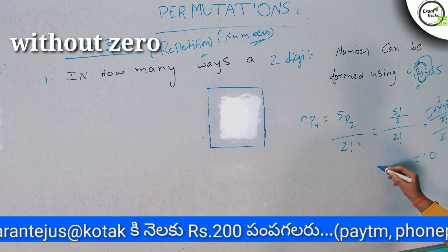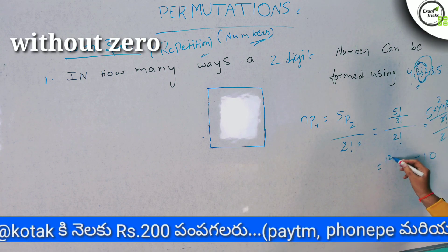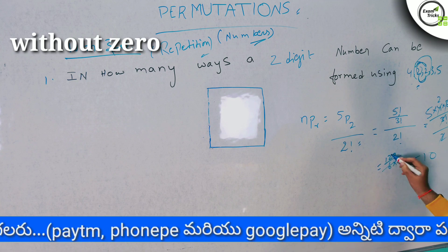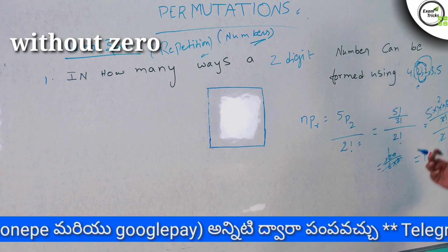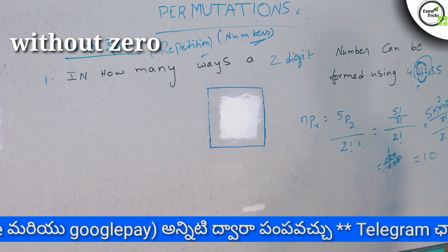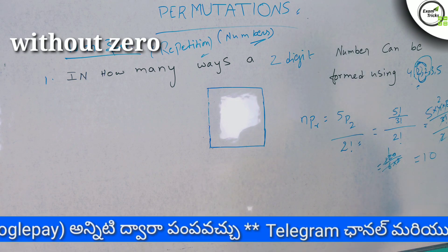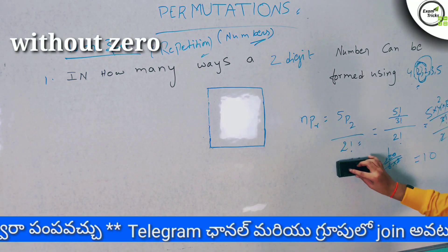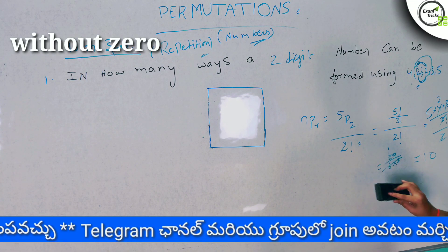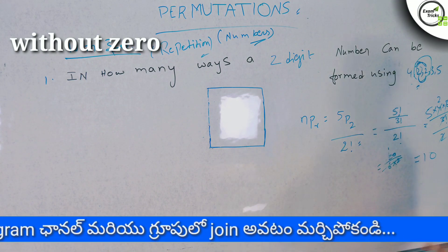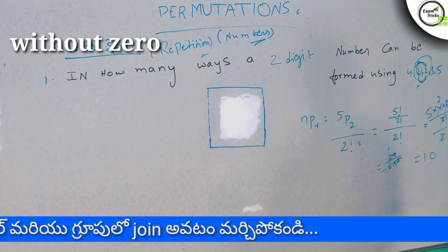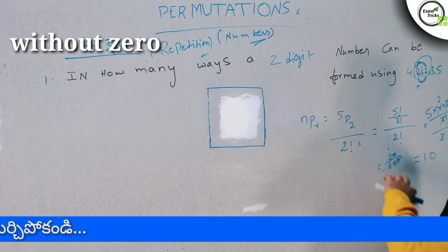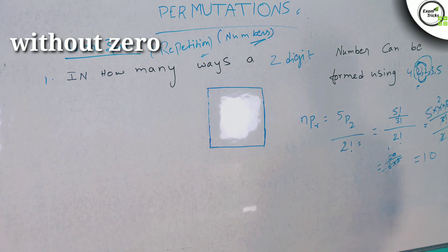So 5 factorial is 120. The denominator is 3 factorial times 2 factorial, which is 6 times 2 equals 12. So 120 divided by 12 gives us 10. That repeated digit goes in the denominator as a factorial. The answer is 10.